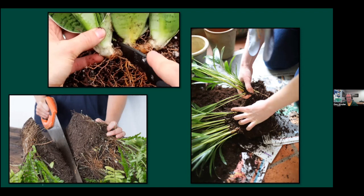When dividing a plant, you can make as many divisions as each has a nice root and a nice stem. For most houseplants, dividing into about four sections is a good ballpark number, unless you really want to start lots — then some plants can make dozens and dozens.